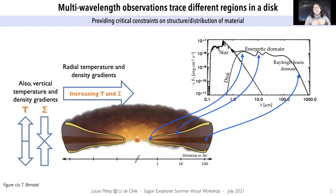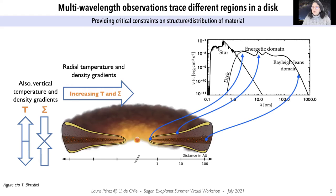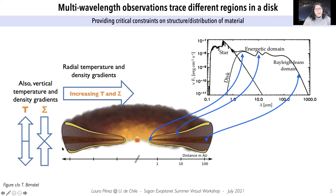Multi-wavelength observations will trace different regions in a disk, which tells us something critical about the structure and distribution of material. The first thing to understand is that very close to a star, densities and temperatures will be larger — there's more material closer to the star, and it is warmer. This means there are radial temperature and density gradients increasing towards the inner regions. At the same time, there are also vertical temperature and density gradients.